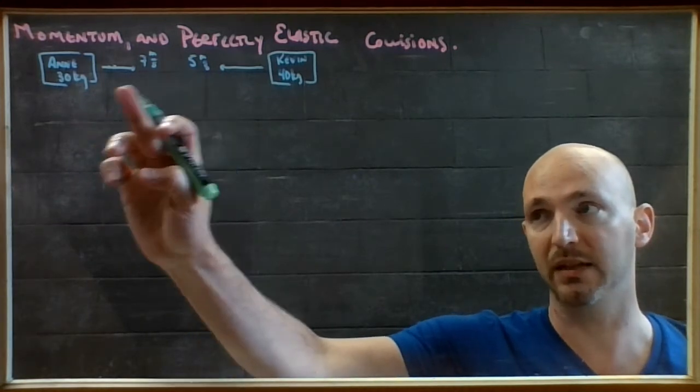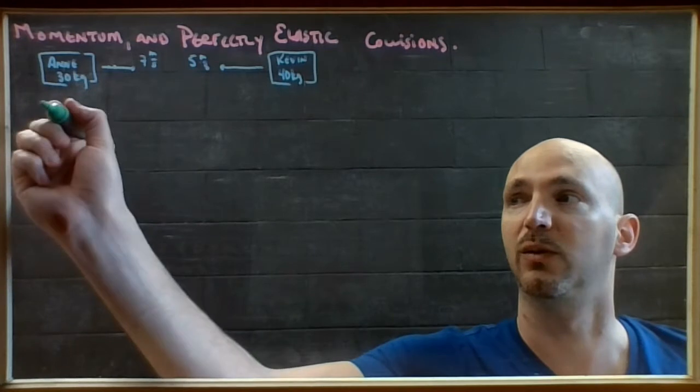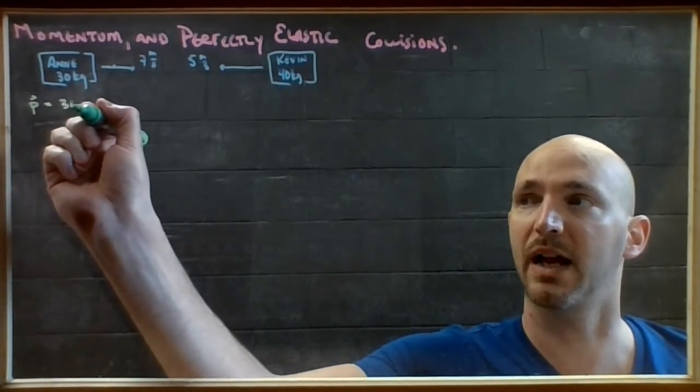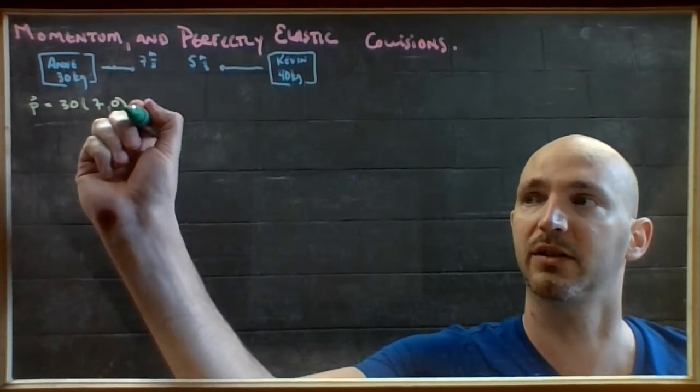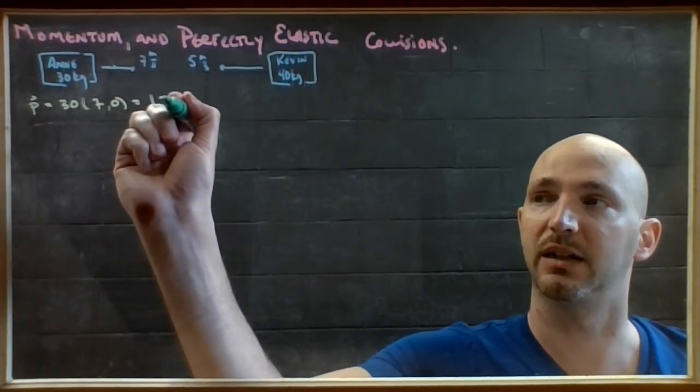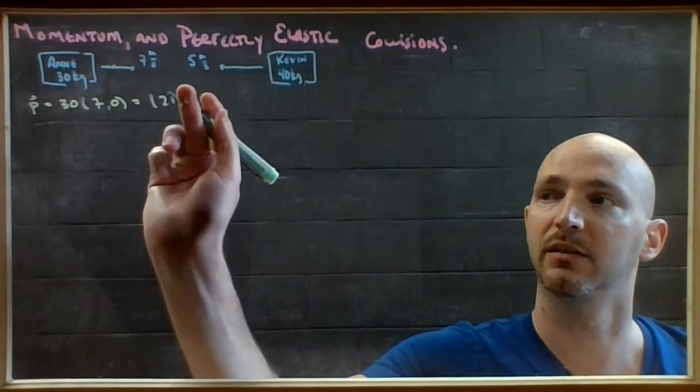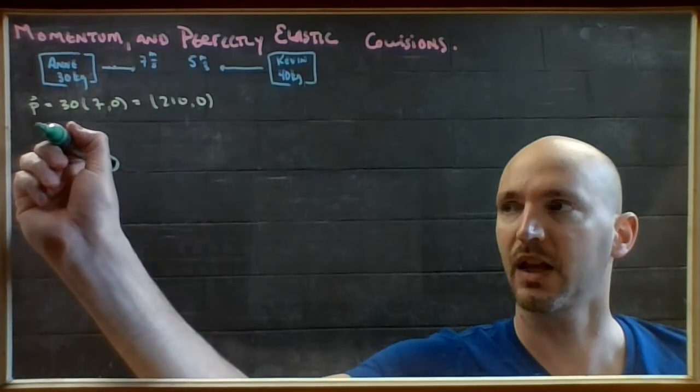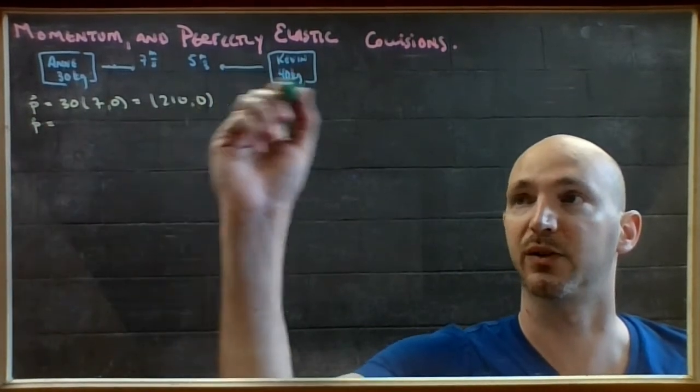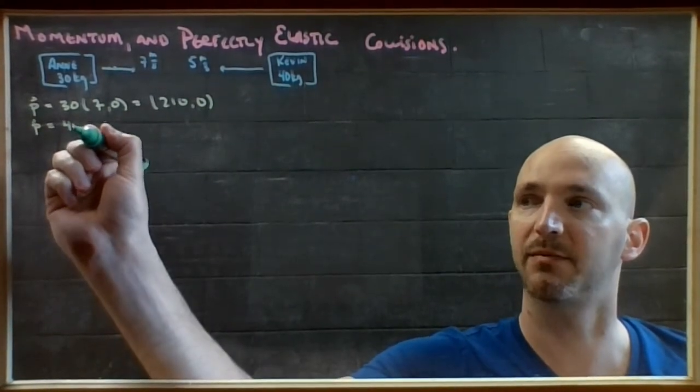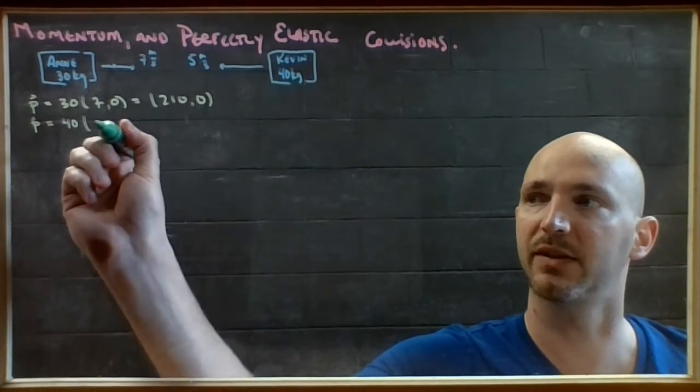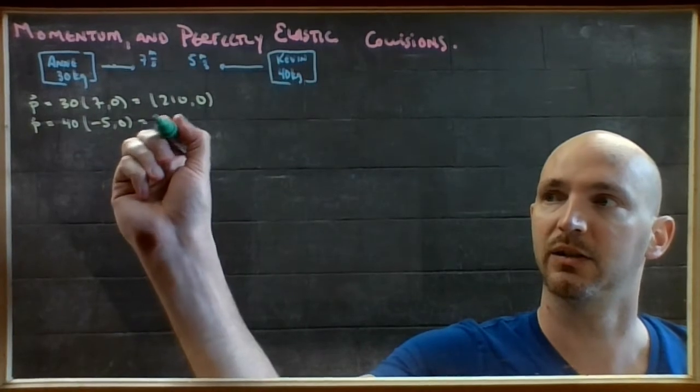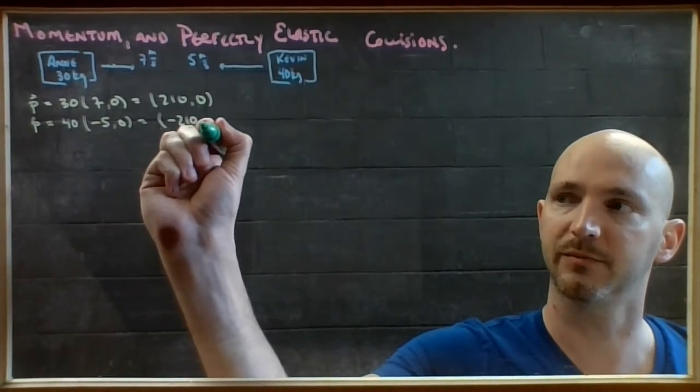I have Ann with a speed and a mass, so I need Ann's momentum. I'll get that by doing her mass multiplied by her velocity vector, which gives me 210, 0. And I have a momentum vector for Kevin, which would be Kevin's mass multiplied by Kevin's velocity vector, negative 5 because he's going that way, which gives me negative 210, 0.